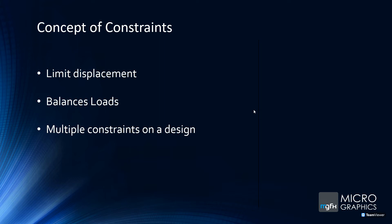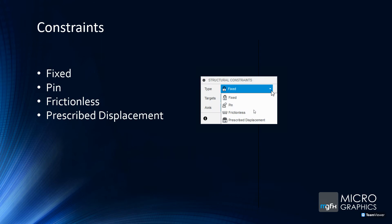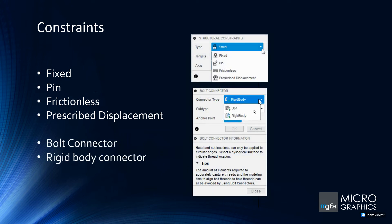You can also have multiple constraints on a design. The types of constraints include fixed, pin, frictionless, and prescribed displacement, as well as bolted connector and rigid body connector.